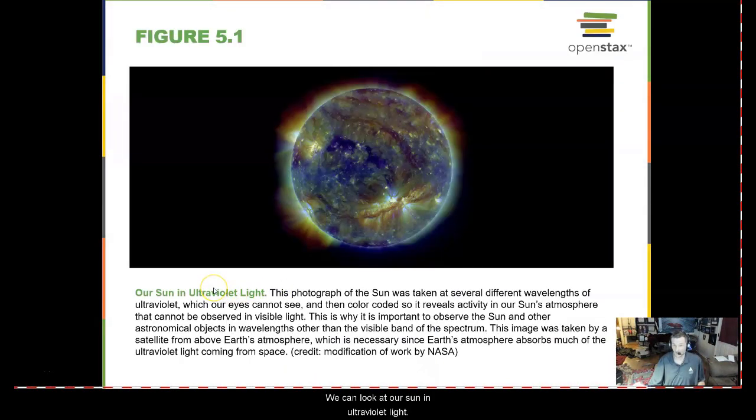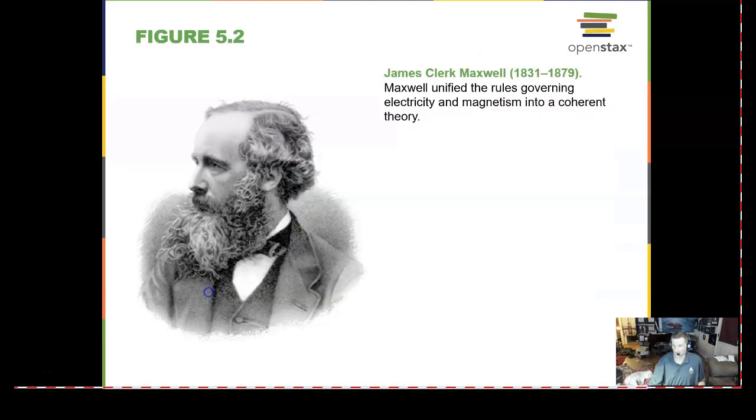We can look at our sun in ultraviolet light. James Clark Maxwell unified the rules governing electricity and magnetism into one theory.